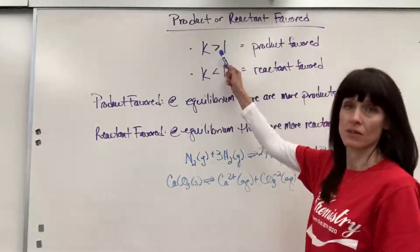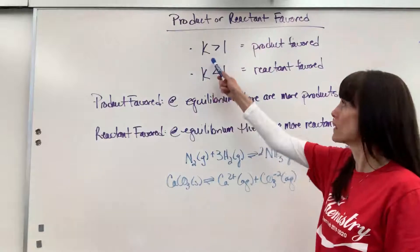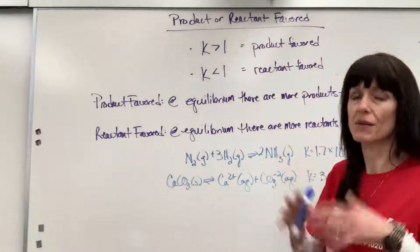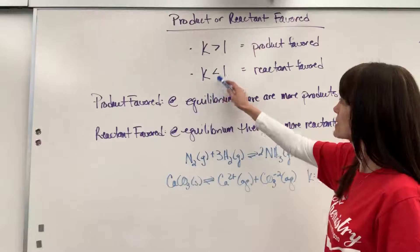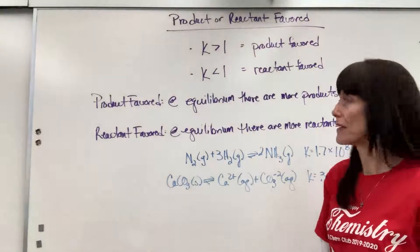If K is greater than 1, your equilibrium expression, that equilibrium constant is greater than 1, is product favored. K anything above 1 is product favored. If K is less than 1, then it's said to be reactant favored.